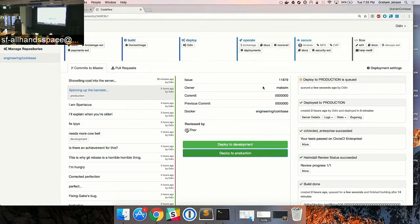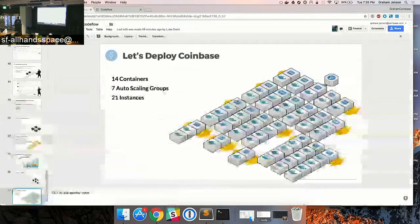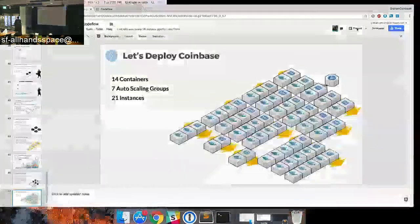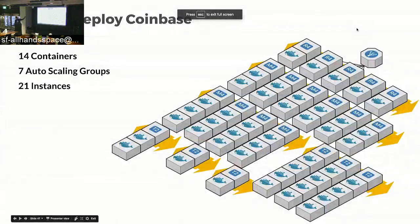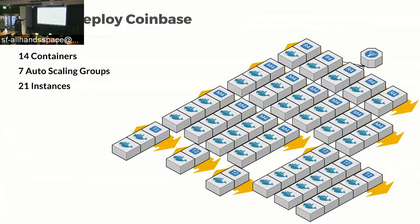I'm now deploying the production version of Coinbase. What did this just do? It spun up all those services — spinning up that many behind an ELB, with all the workers and pollers and different pieces of infrastructure to get Coinbase working: 21 instances, seven autoscaling groups, and 14 container images separated across all of them. What I just did was click a button and roll all of Coinbase. The goal is to allow people to show up on their first day and do that.